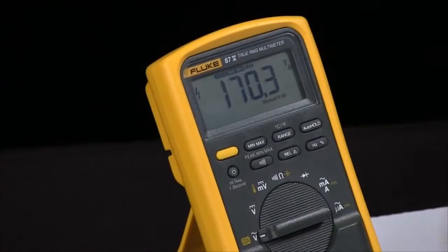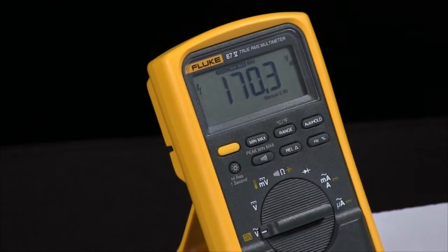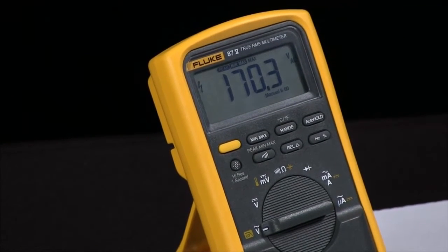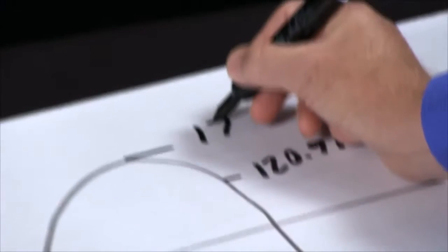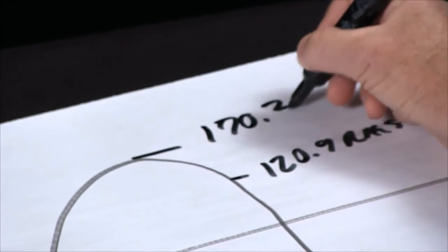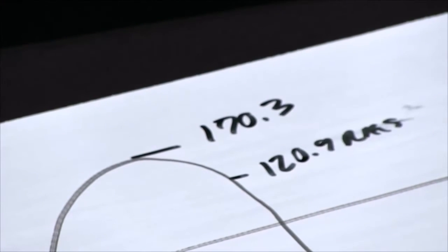By hitting the min-max and then the peak min-max, I put the meter into peak min-max mode, which shows me we have a peak of 170.3.